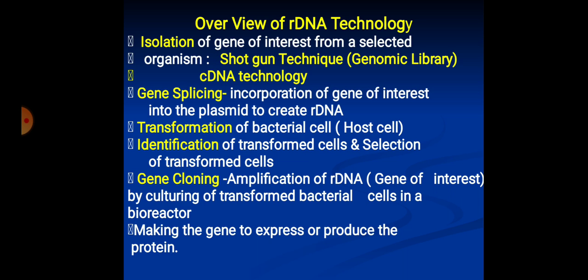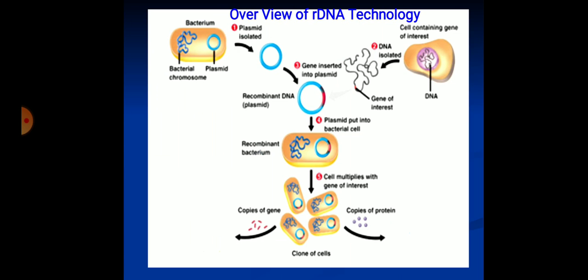Next step is gene cloning — the amplification of the gene of interest in the form of R-DNA by culturing the transformed bacteria in vitro or in a bioreactor. The last step is making the gene express to produce non-bacterial protein.